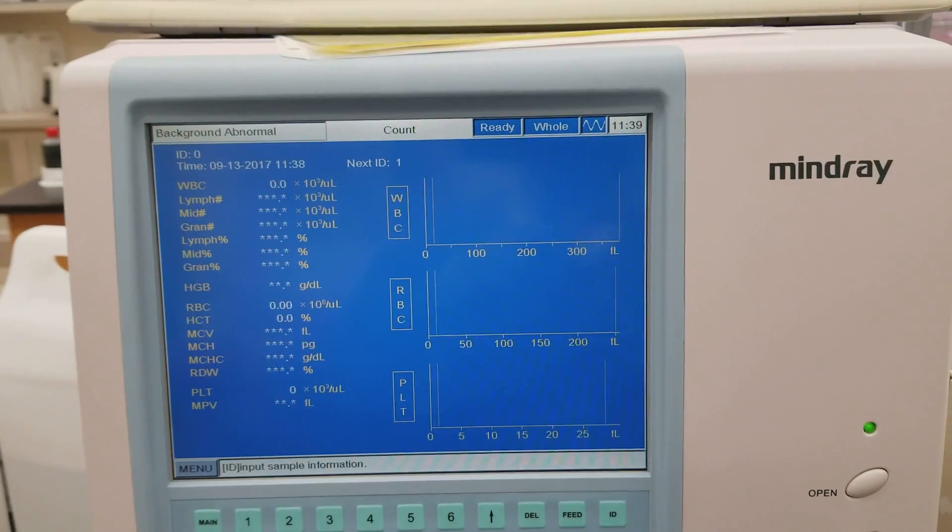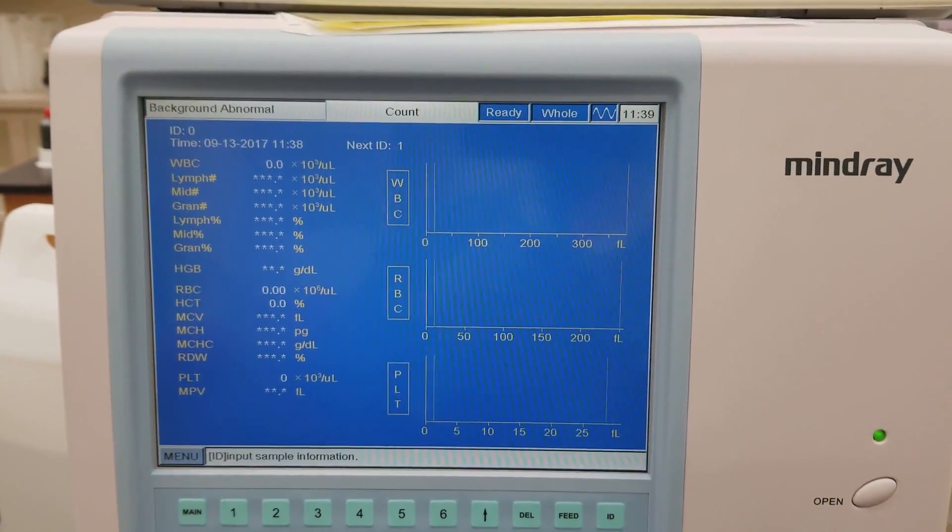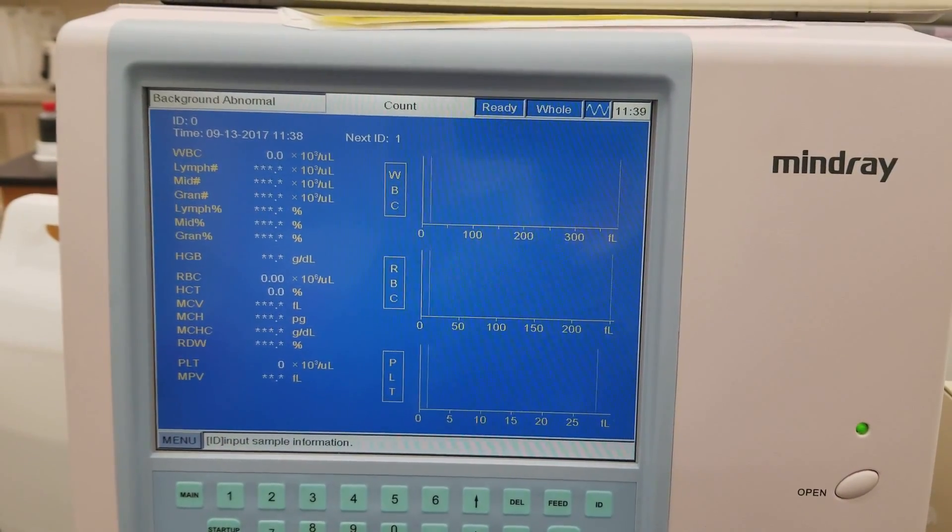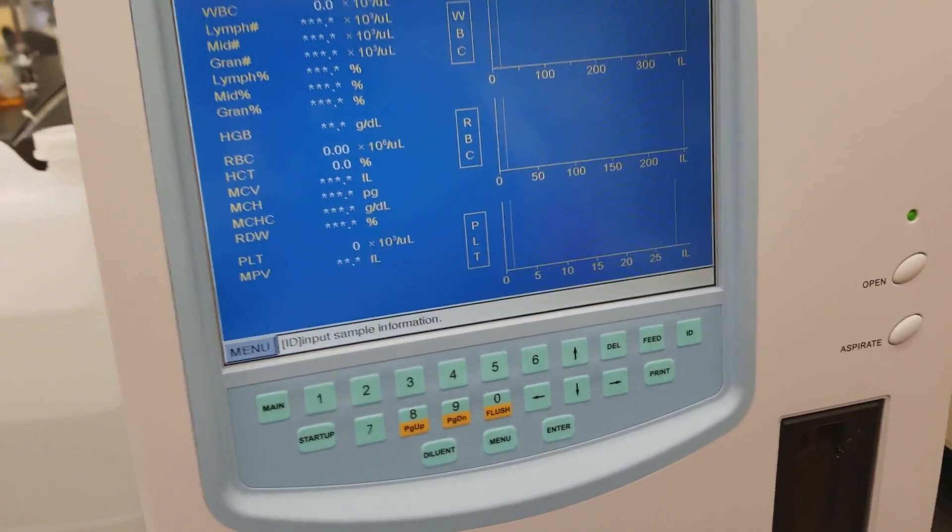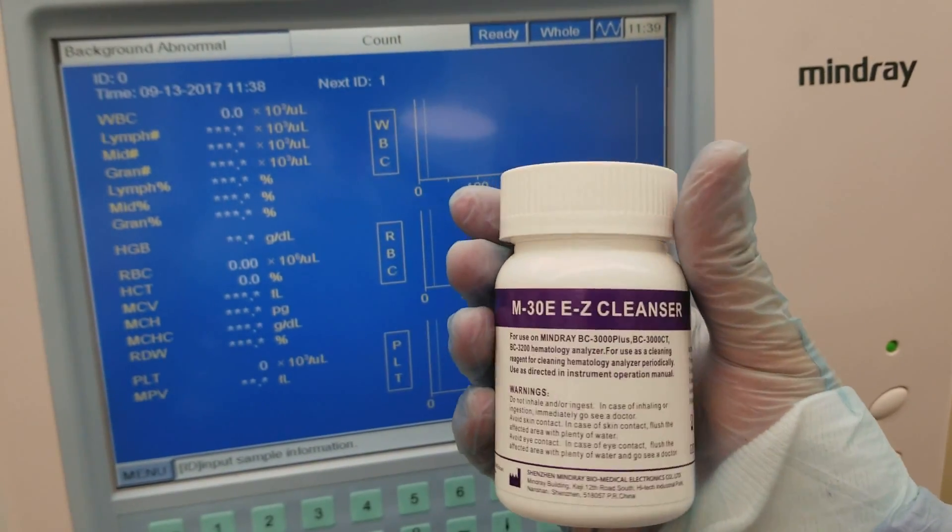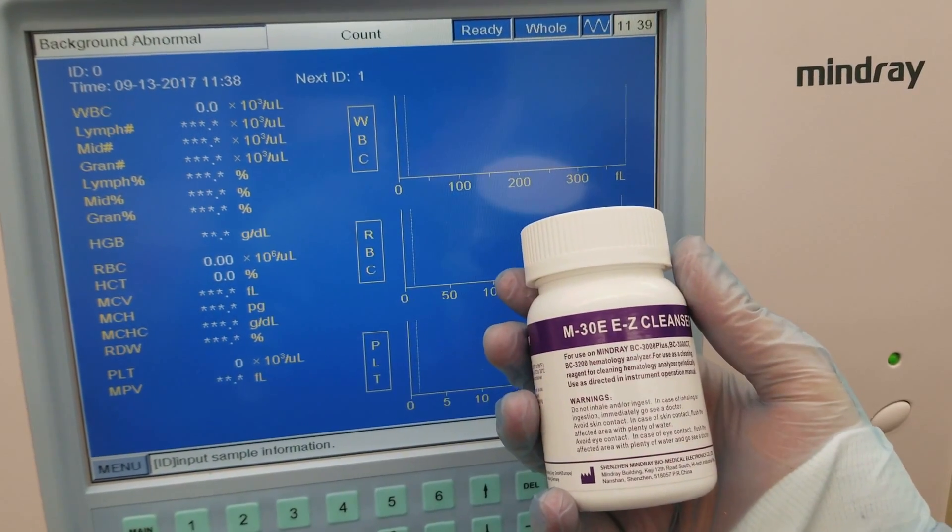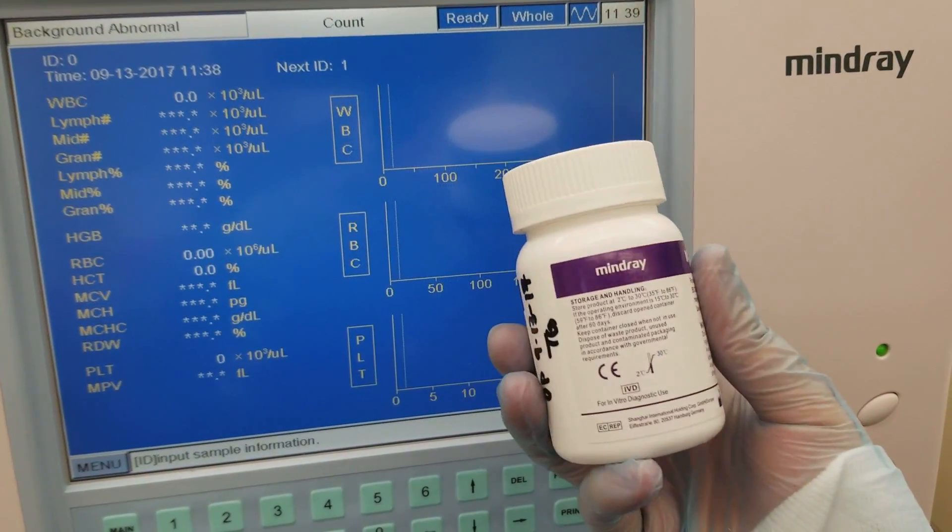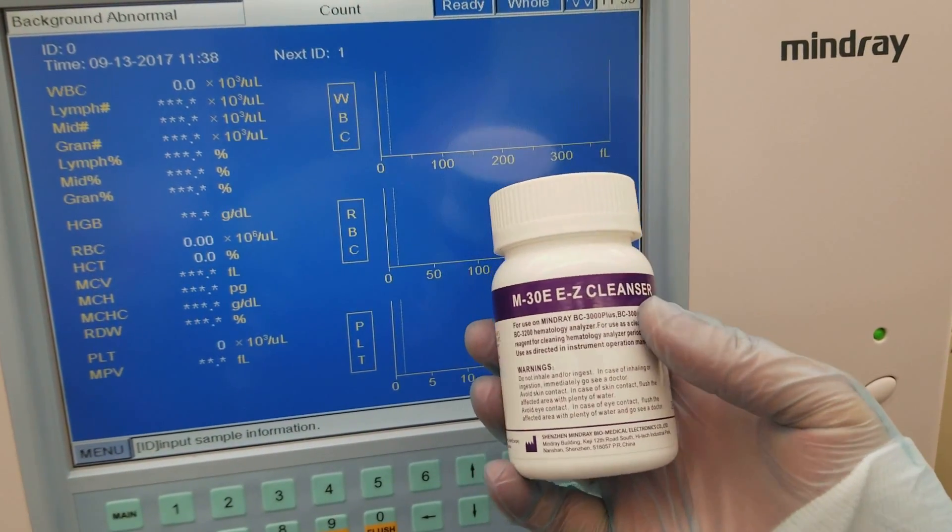Okay, so we still have the errors there, and that is most likely due to the baths not being completely clean. So what I'm going to end up doing is running the easy cleanser. If your analyzer sits for days on end, which ours does because class is only one day a week, you'll have to run this. It's an eight hour period of time that it takes to do this cleanser.